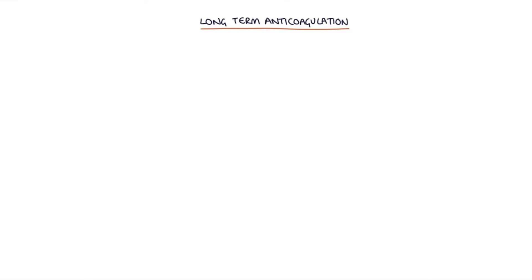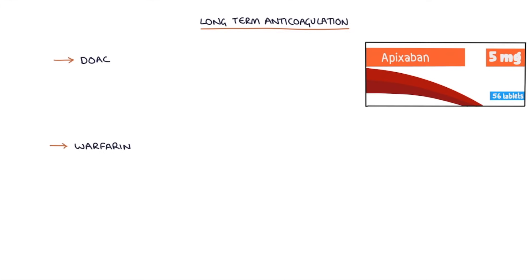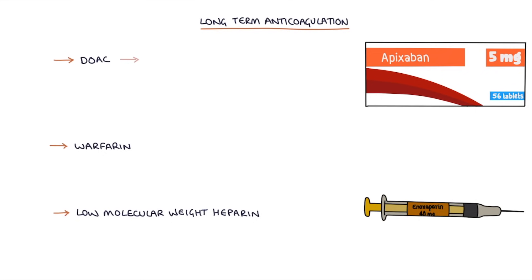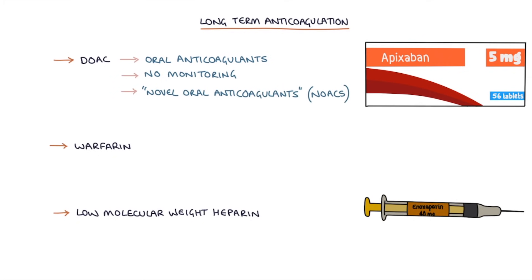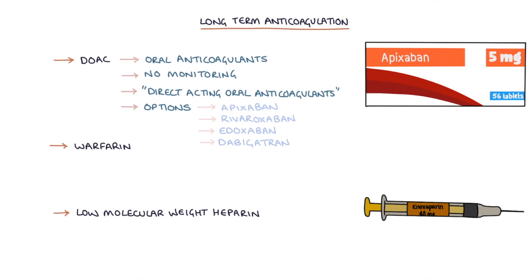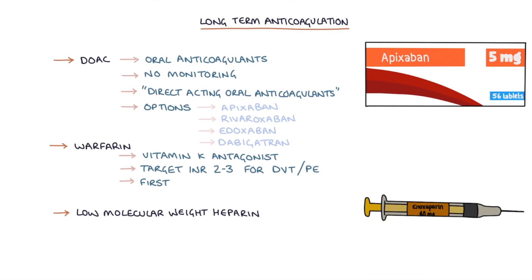Next, let's talk about long-term anticoagulation. The options are a DOAC, warfarin, or low molecular weight heparin. DOACs are oral anticoagulants that do not require monitoring — previously called NOACs, now called direct-acting oral anticoagulants. Options are apixaban, rivaroxaban, edoxaban, and dabigatran, suitable for most patients including those with cancer. Warfarin is a vitamin K antagonist with a target INR of 2–3 when treating DVTs and PEs. Warfarin is first line in patients with antiphospholipid syndrome, who also require initial concurrent treatment with low molecular weight heparin.